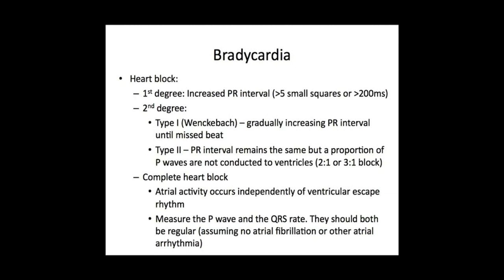In type one Wenckebach, there is a gradually increasing PR interval that ultimately leads to a missed QRS complex — a missed beat — and then it resets. In type two, the PR interval remains constant and does not gradually increase. However, a proportion of P waves are not conducted successfully to give a QRS complex. This can occur in a two-to-one or a three-to-one ratio.